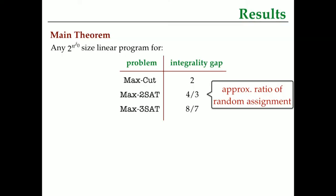What this result is saying is that even if you augment your trivial algorithm and use a mega 2 to the n to the delta naught size LP to help you out, it's still not going to work out. You're still in the worst case going to suffer from a gap of 2, which is basically the same as the performance of the trivial random assignment algorithm. Similarly for max 2-SAT where the right number is 4/3 and max 3-SAT where the right number is 8/7 and so on.